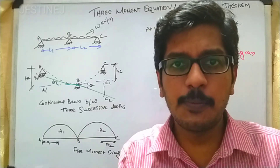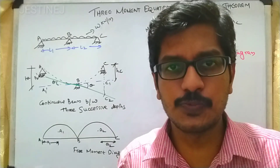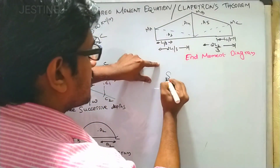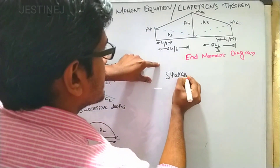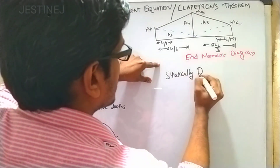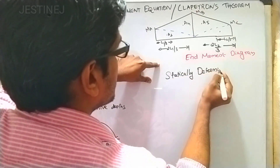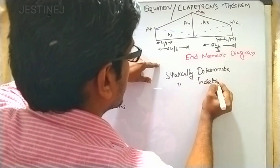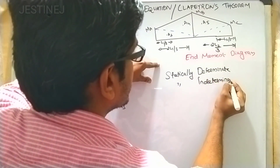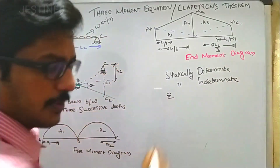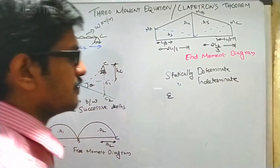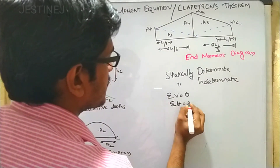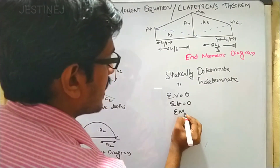What do you mean by a statically determinate structure and what do you mean by a statically indeterminate structure? We know that there are three equilibrium equations: sigma V equal to zero, sigma H equal to zero, and sigma M equal to zero.